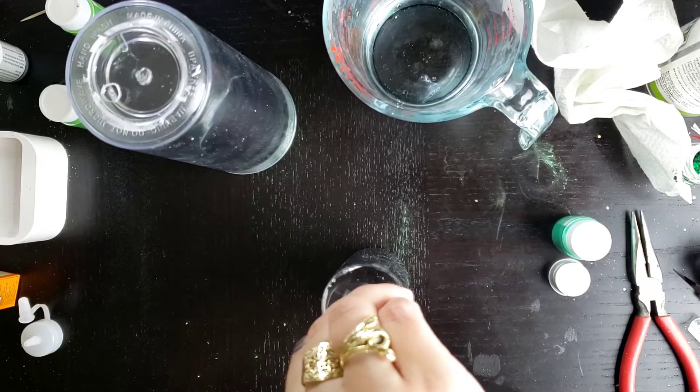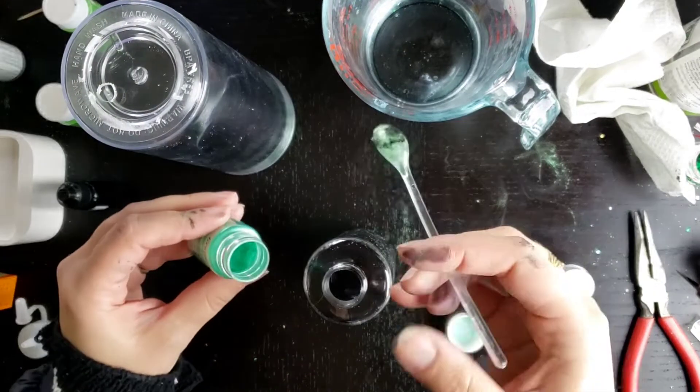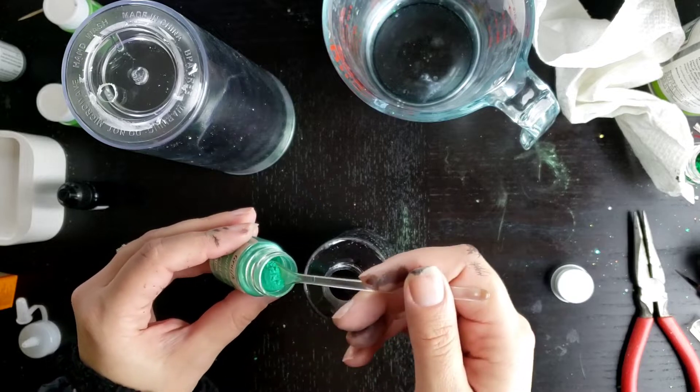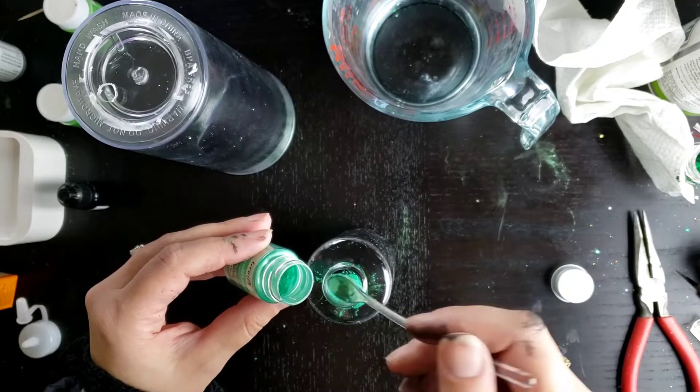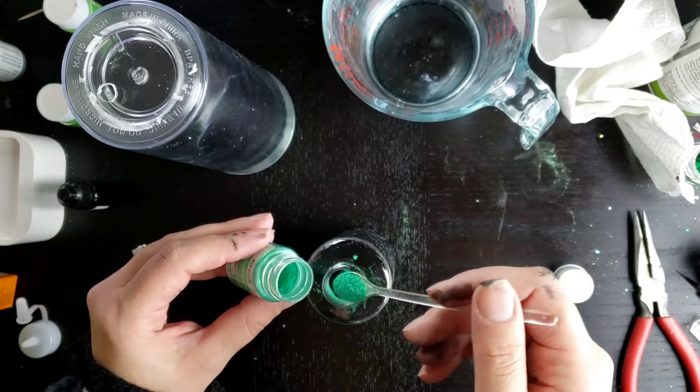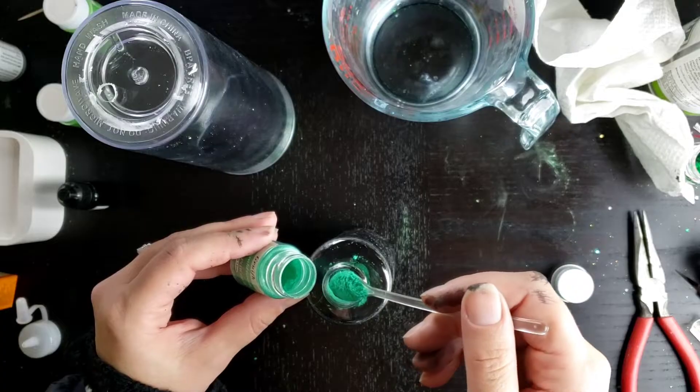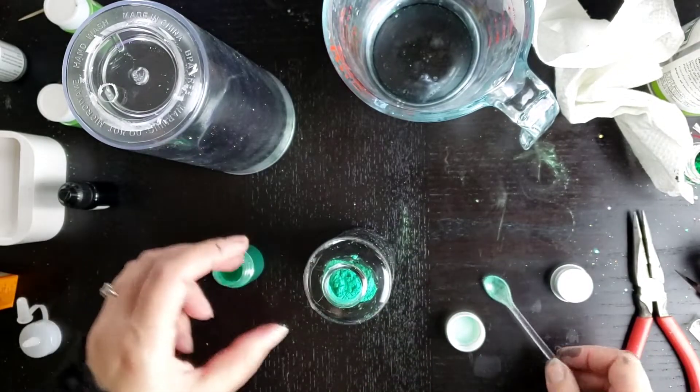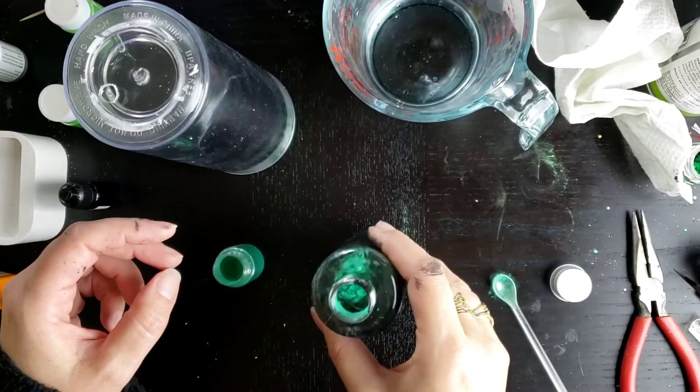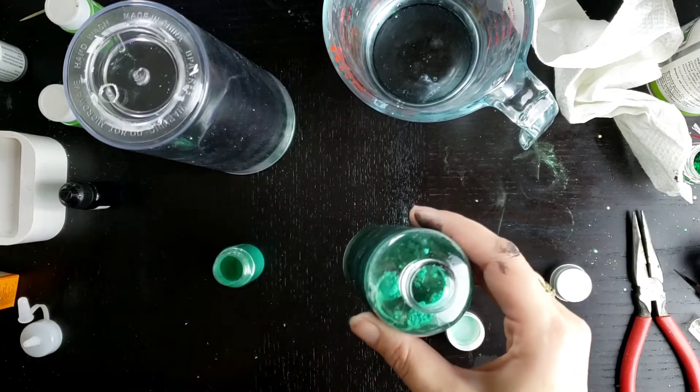So I think I want about six drops. I'm going to start with three scoops of the mica powder. I'm going to give that a swirl and see what it looks like. I can see if we need to adjust it.